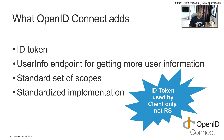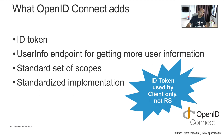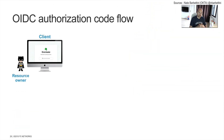OpenID Connect is on top of OAuth. It's a token — the name of the token is ID token — and it just provides information regarding yourself. So let's take an example. We have Batman. Batman is known as the resource owner. Batman owns something — for instance, a mailbox, contacts.